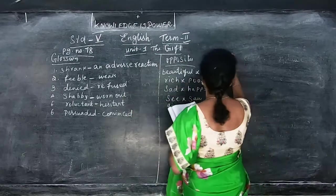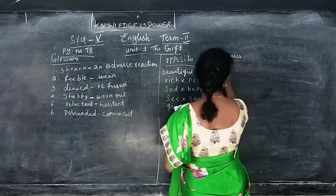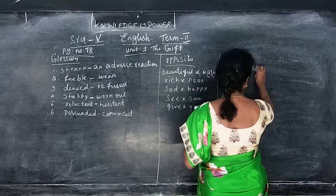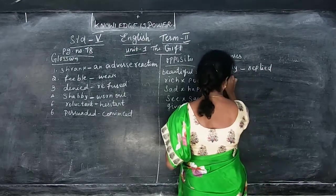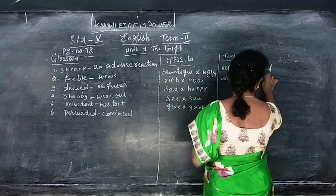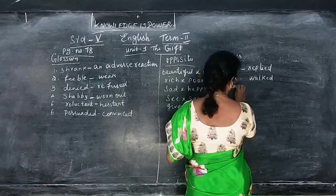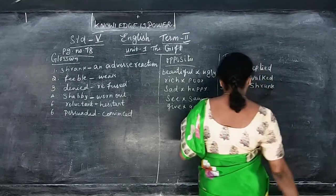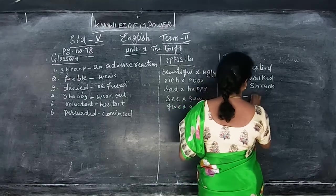Next is tenses. You can write: reply — replied. Spelling must be correctly written, children. Walk — walked, shrink — shrank, deny (D-E-N-Y) — denied.